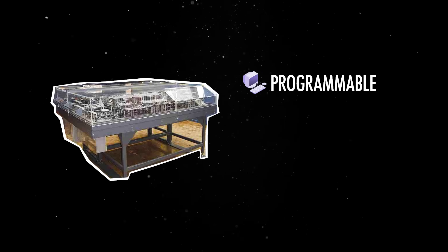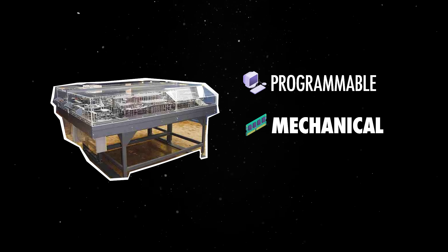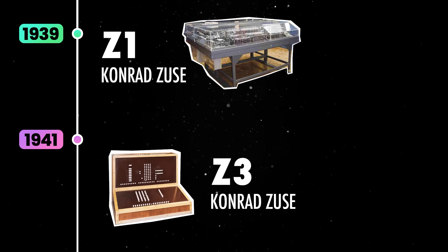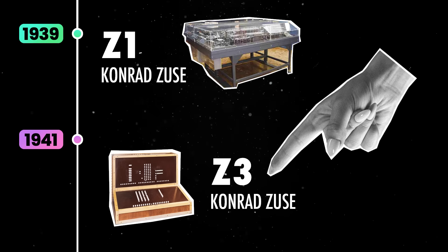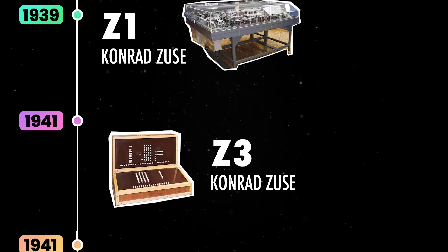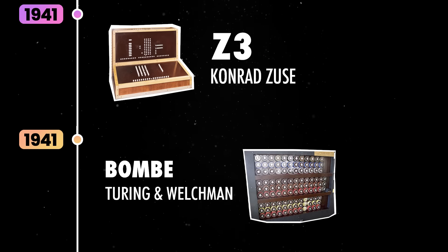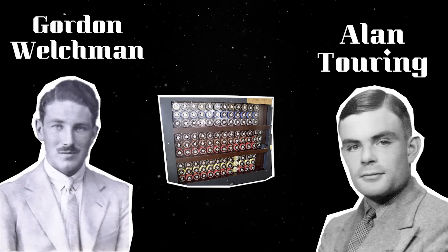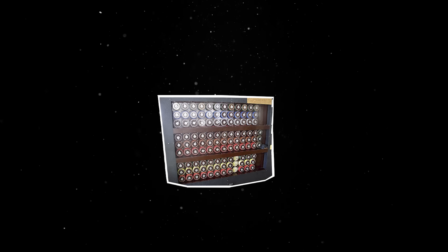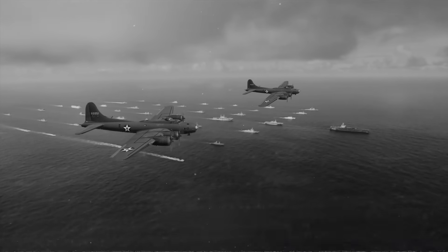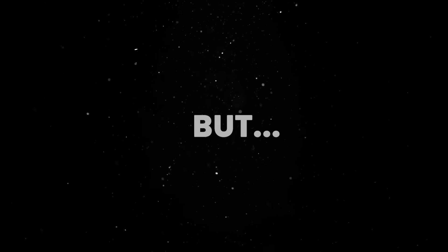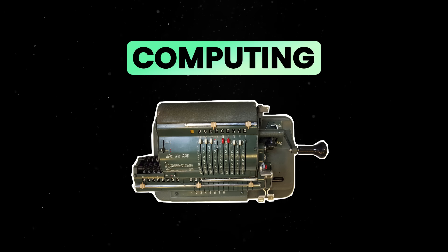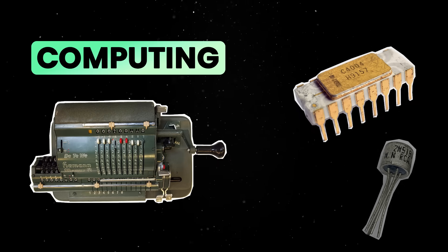The Z1 was a fully programmable binary computer with a mechanical memory unit and a control system that could execute simple instructions. While it remained a prototype, Seuss' ideas paved the way for Z3, the first fully operational electromechanical computer, in 1941. Another fascinating computer of the era was the Bombe, designed by Alan Turing together with Gordon Welchman in July 1940 and operational just a few months later. The Bombe played a crucial role in shortening the Second World War by helping the Allies break Enigma encrypted messages. But the real leap was yet to come — in order to scale, computing had to move from mechanical gears, punched cards and vacuum tubes, to transistors and microprocessors.